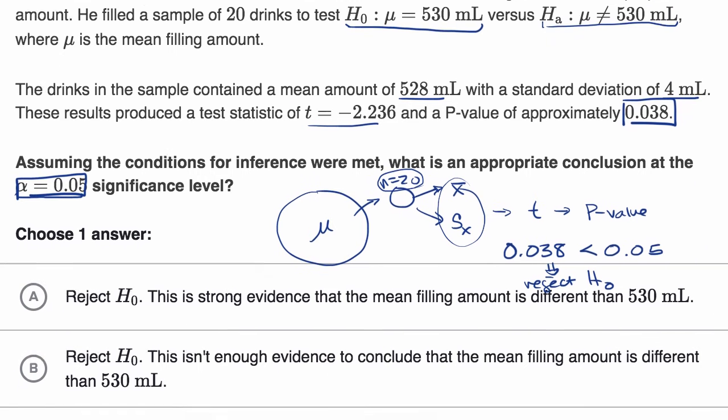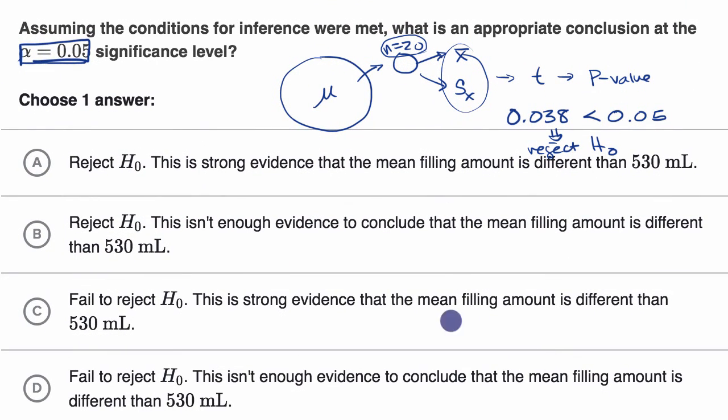If we look at our choices here, the first choice says reject the null hypothesis. This is strong evidence that the mean filling amount is different than 530 milliliters. That one looks good. This suggests the alternative hypothesis, which is that right over there.